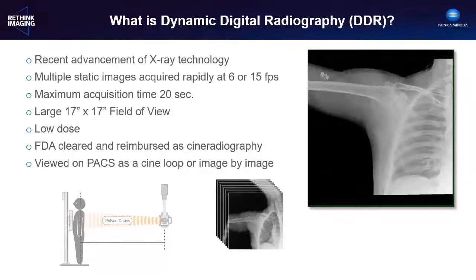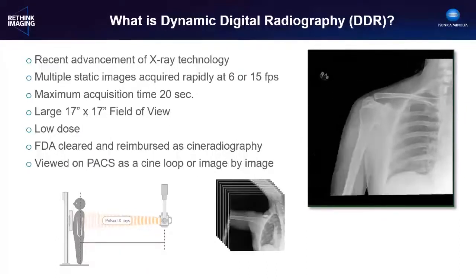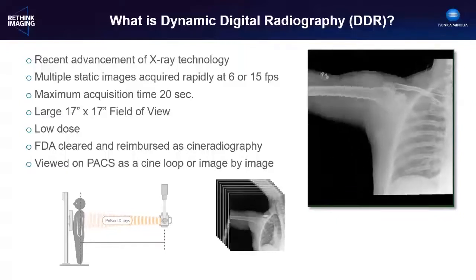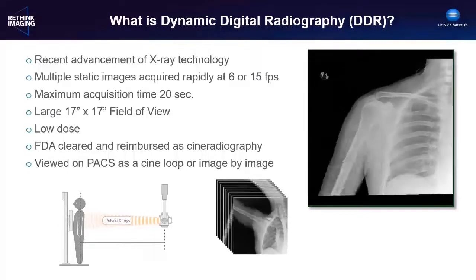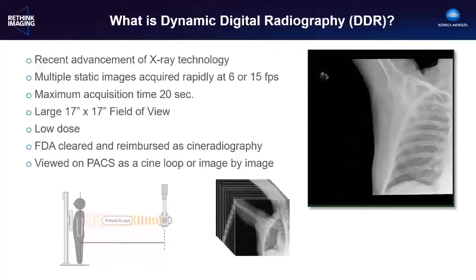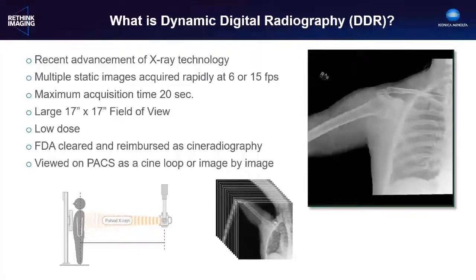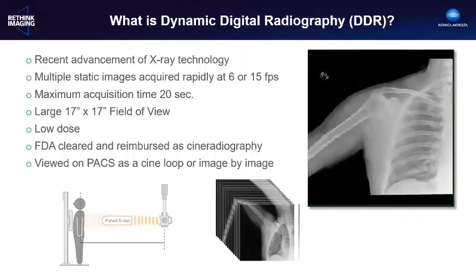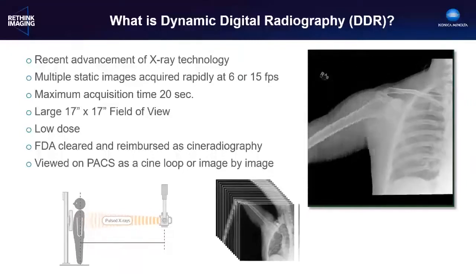Dynamic digital radiography, or DDR, is a recent advancement cleared by the FDA in late 2018 that enables the acquisition of a series of static images at 6 or 15 frames per second. With current implementations, the maximum acquisition time is 20 seconds and it can be acquired over the full 17 by 17 inch field of view of a large format flat panel digital detector. The system requires a pulsed x-ray source to ensure very low dose. For a 15-second, 15-frame-per-second chest acquisition, the typical dose is just over seven microgray per frame for a total of about 1.5 milligray. The resulting image datasets are viewed as standard DICOM objects on a PACS, either in a cine loop or paged through frame by frame. Individual frames can be extracted for archiving or further analysis, just as a conventional static image would be.